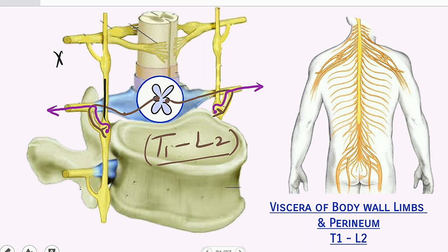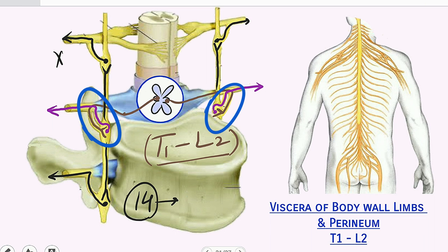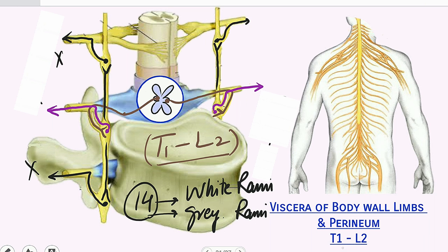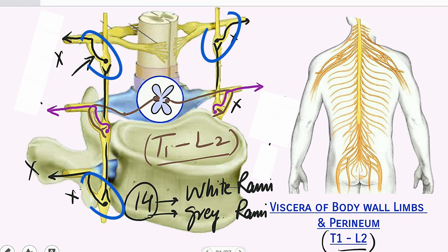For spinal nerves at upper levels, the white rami communicantes ascend in the chain and synapse with the post-ganglionic neuron (gray rami communicantes) at a higher ganglia, which then travels in that spinal nerve. Likewise, the pre-ganglionic neuron descends in the chain, reaches a lower ganglia, and the gray rami communicantes travels in that spinal nerve. In this way, in the 14 thoracolumbar segments we have both white rami communicantes and gray rami communicantes. But in the rest of the spinal nerves — at higher and lower levels — we have only the gray rami communicantes.